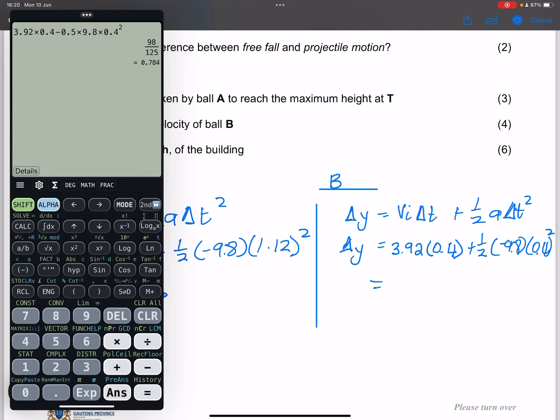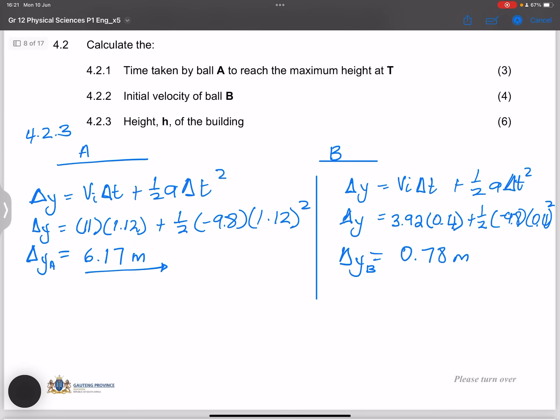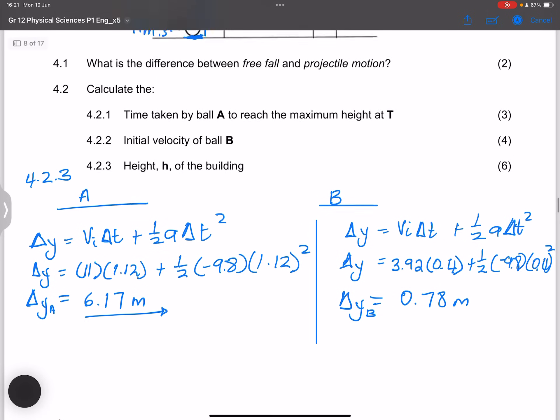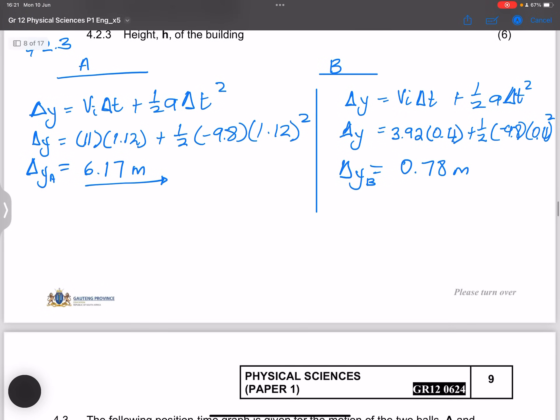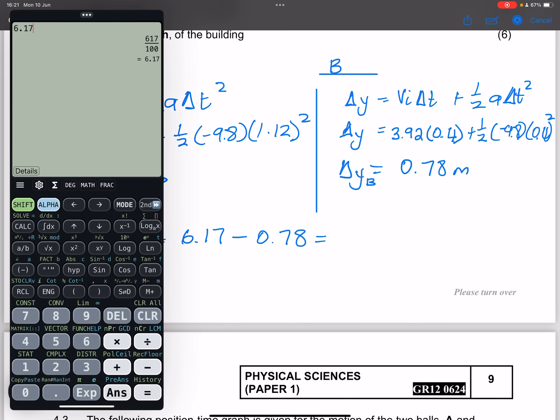Okay minus 0.5 times 9.8 times 0.4 squared. I hope that you are checking against your own calculations there. So delta Y for B, so this is for A this is for B. So B was displaced 0.78 meters. In this case now I want you guys to note so the height of the building would be that 6.17 minus 0.78 and so let's find that height. So that 6.17 minus 0.78 and I get a height of 5.39 meters. Please just check there if you do get to the same value and that is how I would calculate that.